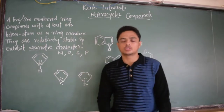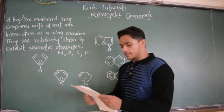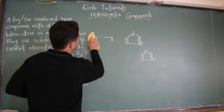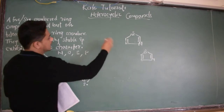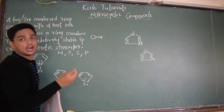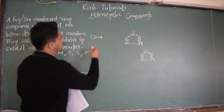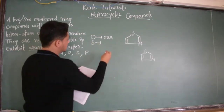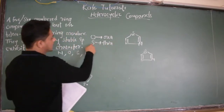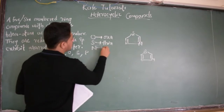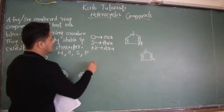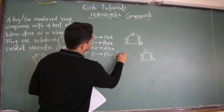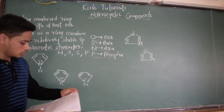So how do we name these compounds? We should know nomenclature. To do nomenclature, you need to remember these things. If the heterocyclic compound contains oxygen as the hetero atom, you say 'oxa.' If sulfur is present, you say 'thia.' 'Aza' stands for nitrogen, and if phosphorus is present in the ring, it is 'phospha.'